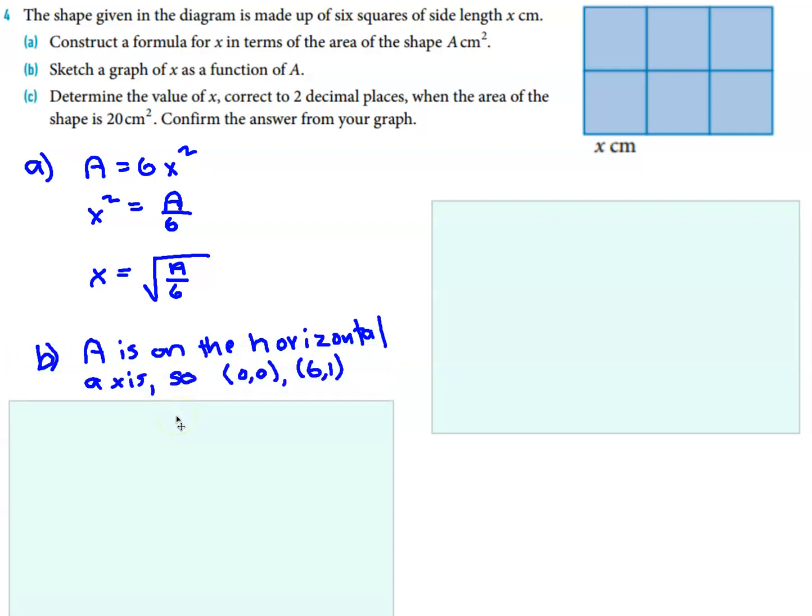Okay, A is on the horizontal axis, so notice in this case x is actually vertical, not horizontal, which is unusual. So let's get a couple of points that actually lie on the graph. So when A is 0, x is 0, and when A is 6, we get 6 divided by 6, which is 1, square root of 1 is 1.